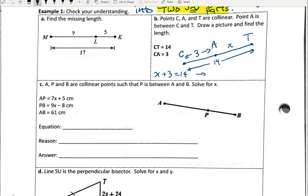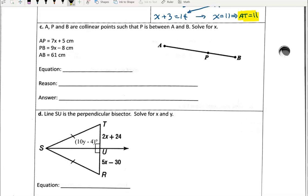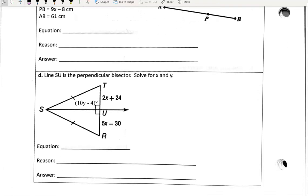I'm going to want you to get in the habit of writing equations as well. If we subtract 3 from both sides, we get X is equal to 11, which means that AT is equal to 11.